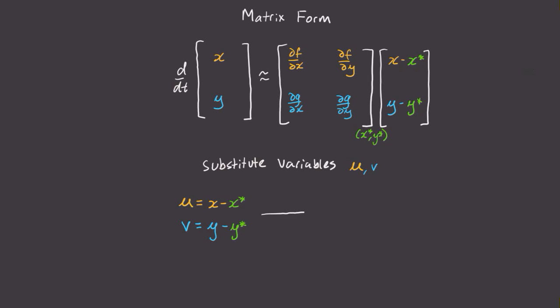When we differentiate both of these equations, we get u dot is equal to x dot minus d dt of x star, which is zero. And v dot is equal to y dot minus d dt of y star, which is also zero.